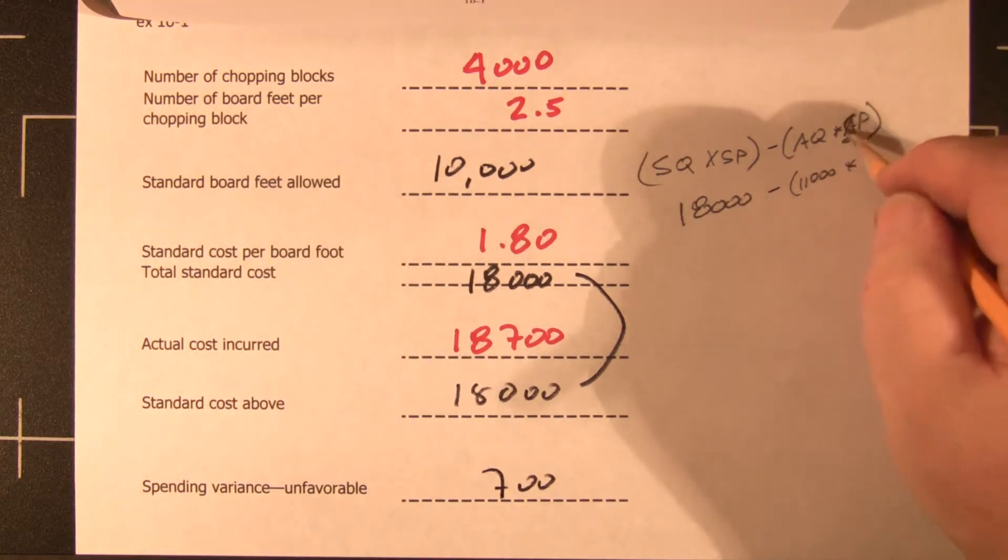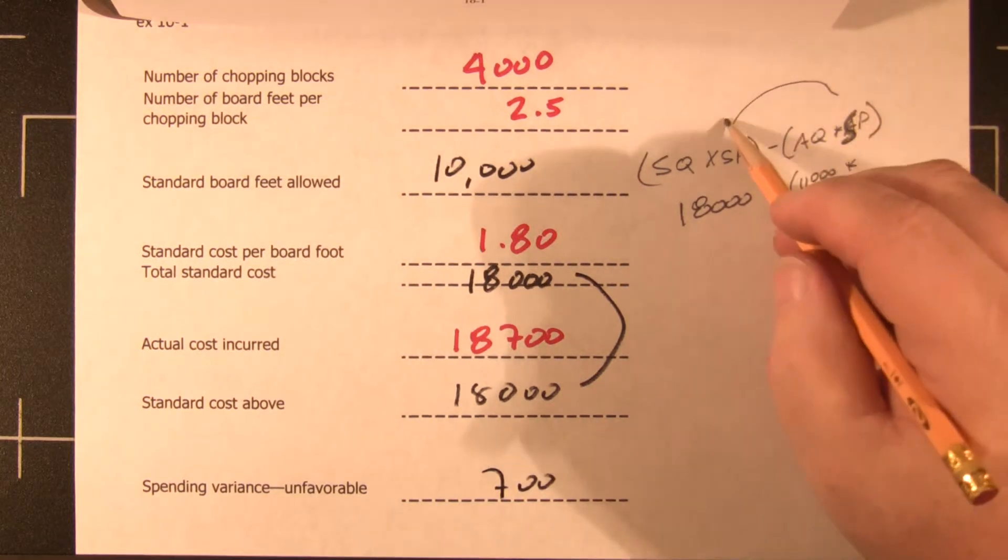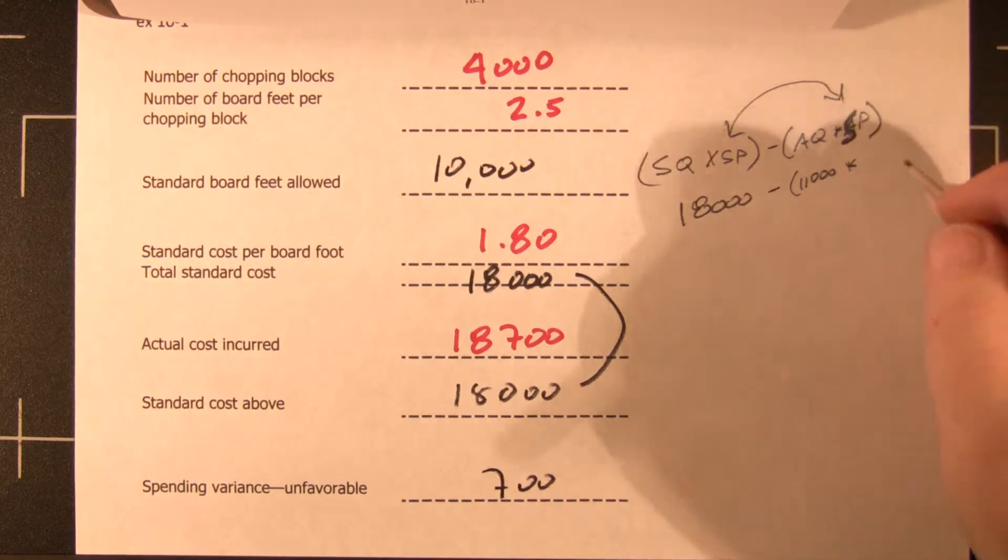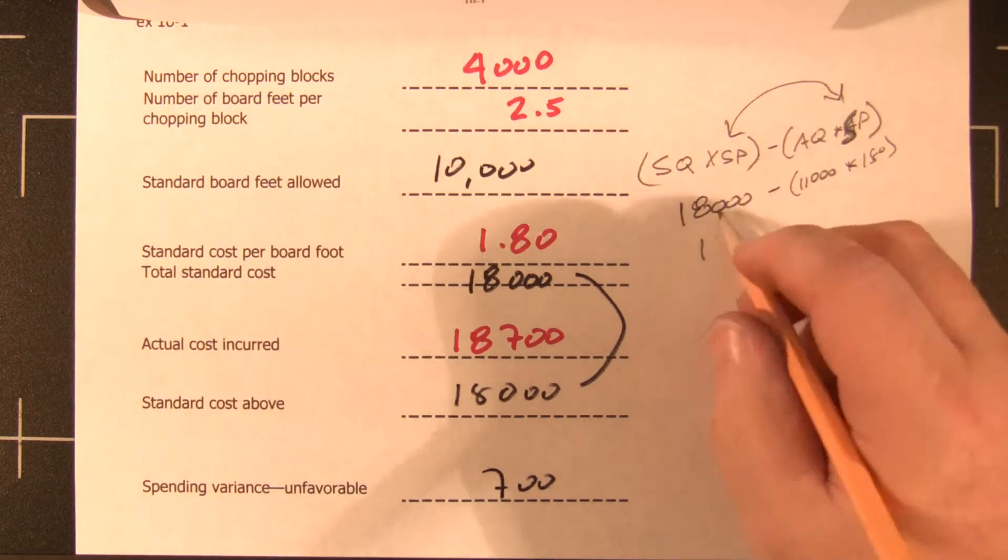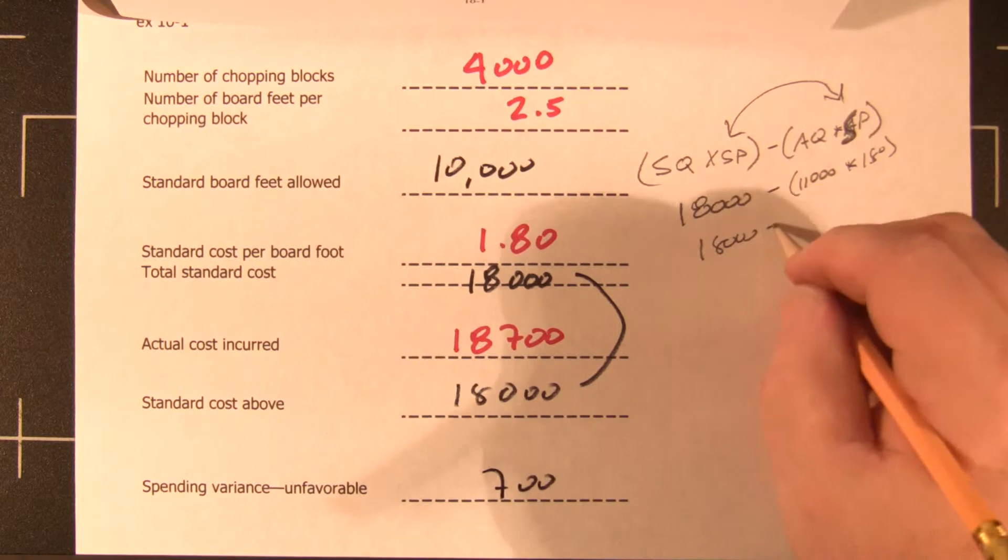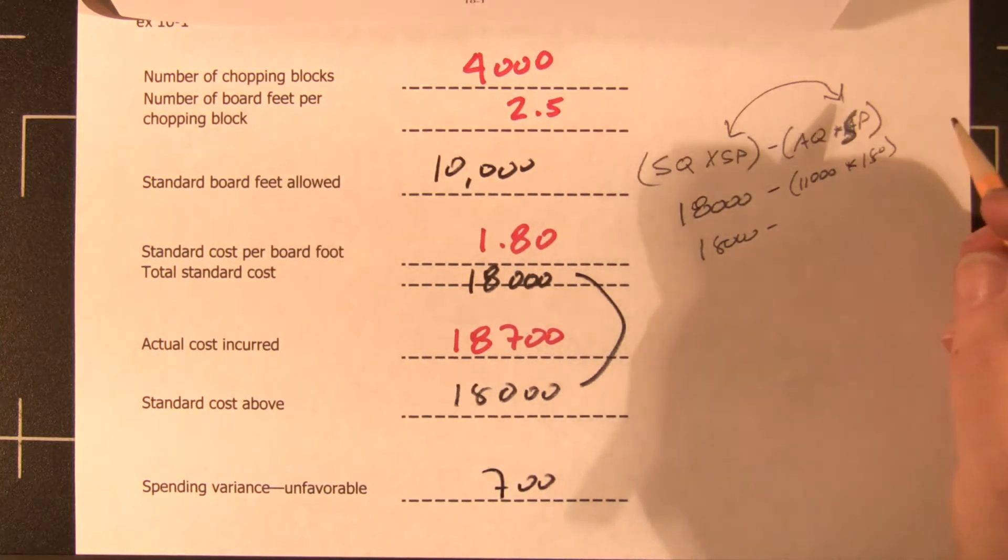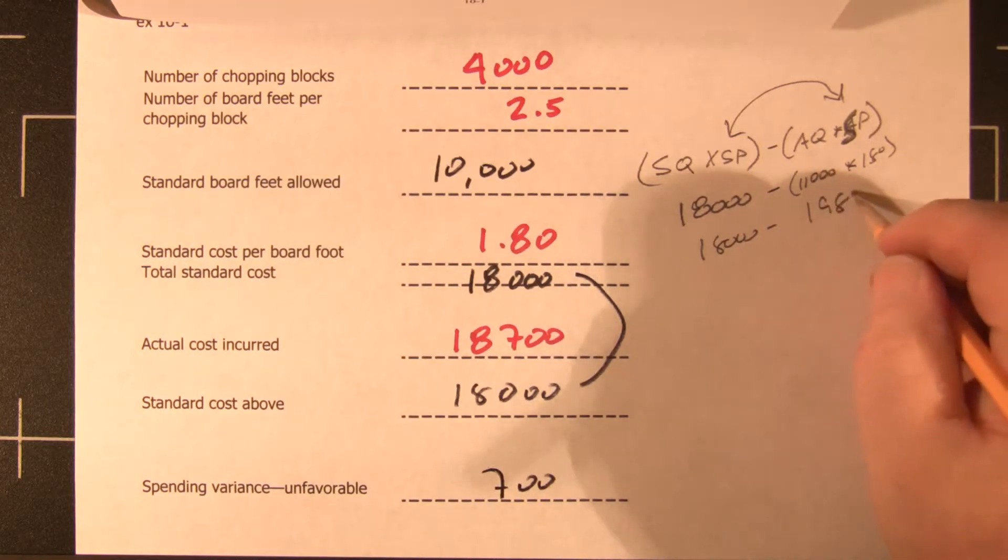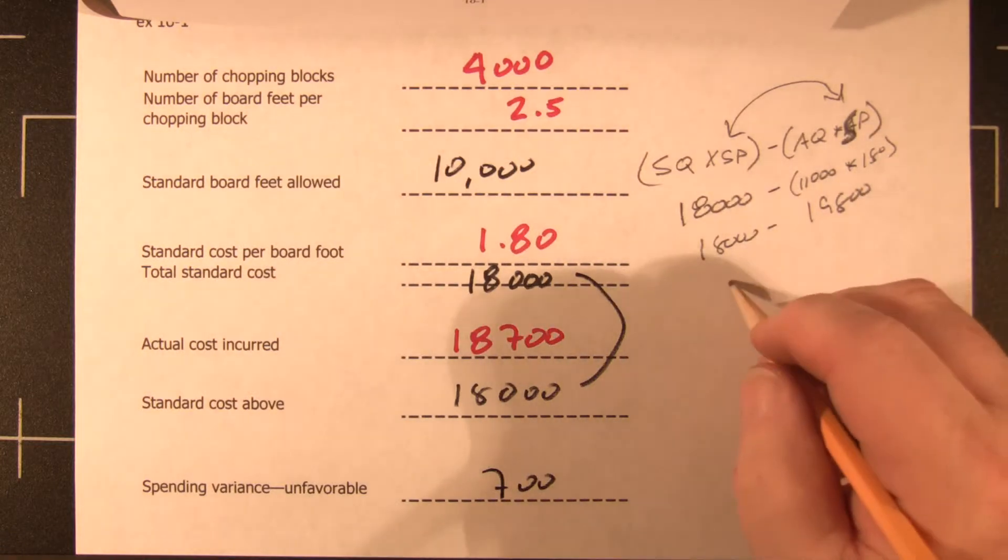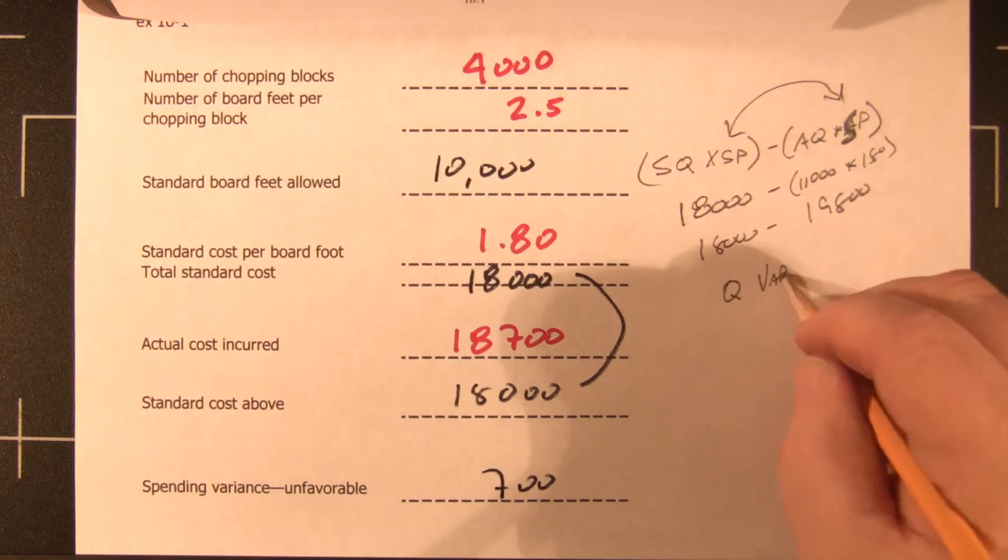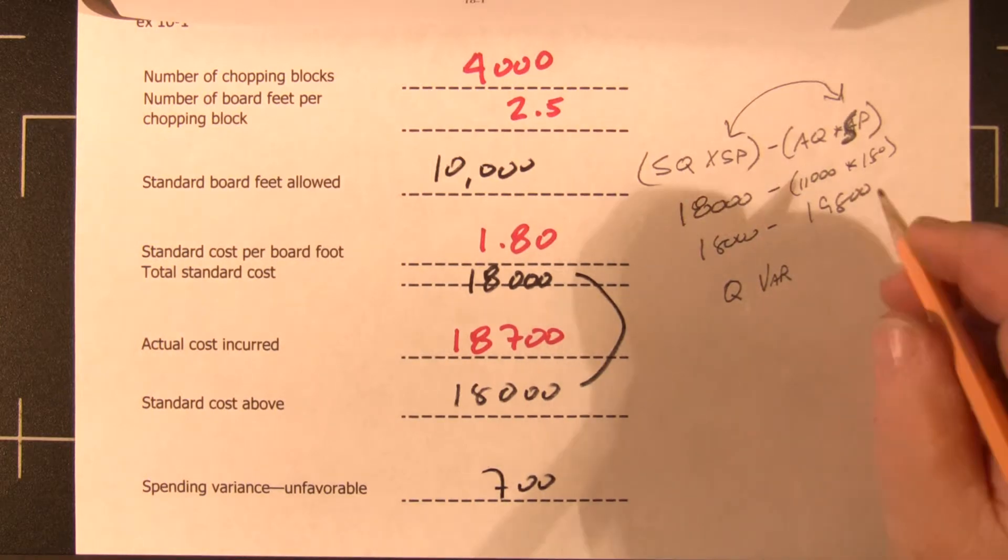I said actual quantity times the actual price, but it's the actual quantity times the standard price here. Because remember we're keeping the standard price constant of $1.80. So we have $18,000, and we have $19,800 is what we actually used. So we have a quantity variance of $1,800.